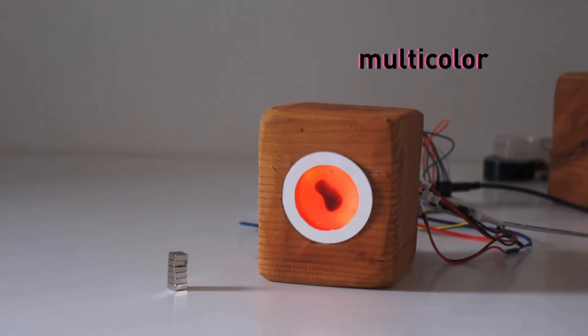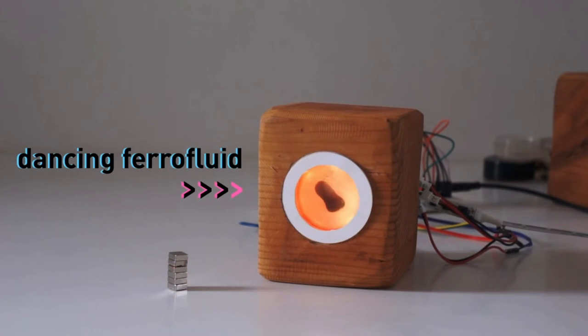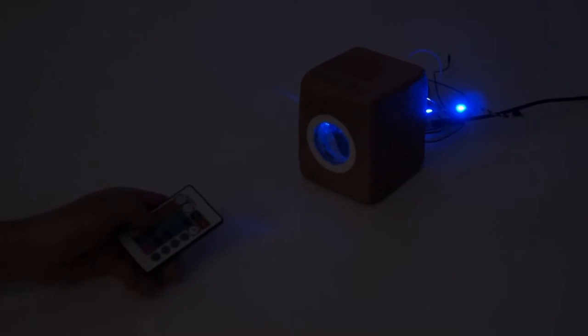Our FerroPet lamp is a USB powered multi-color device with a dancing ferrofluid blob fixed in the center. You can change the blob's color and dancing style through an included remote control depending on your mood.